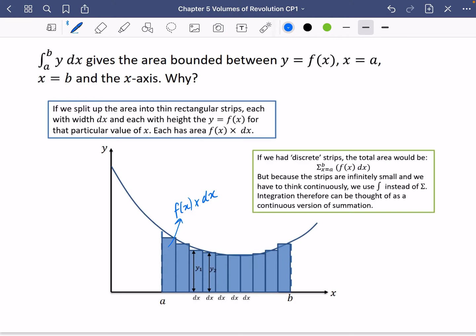So if we had discrete strips, and when I say discrete, I mean in the same way that we'd use the word discrete in statistics, that they are not going to be continuous. The total area would be the sum from x equals a to b of f of x multiplied by dx. That's what we'd actually be doing to find out the area. We'd be adding up all of those strips together.